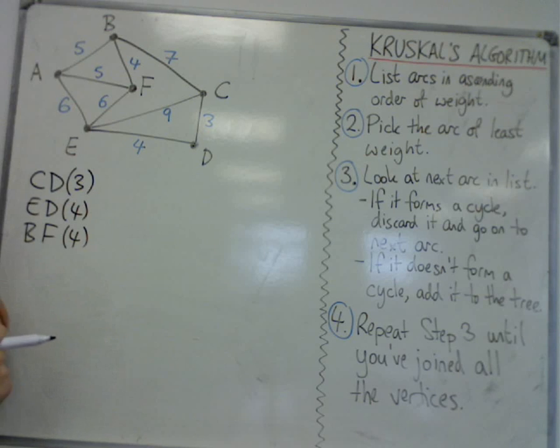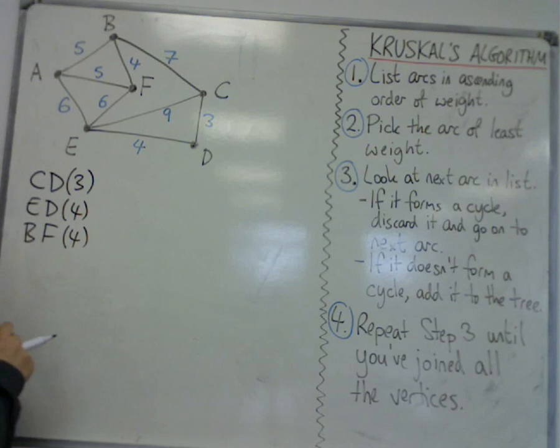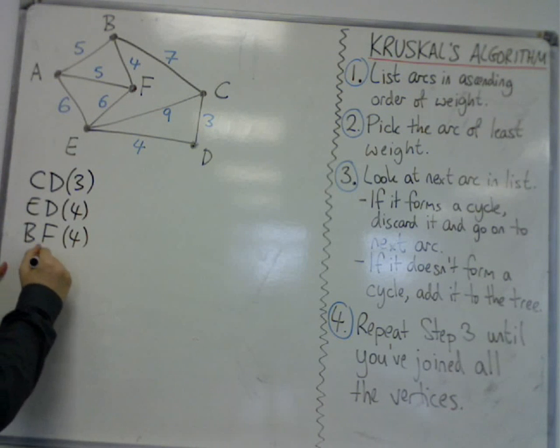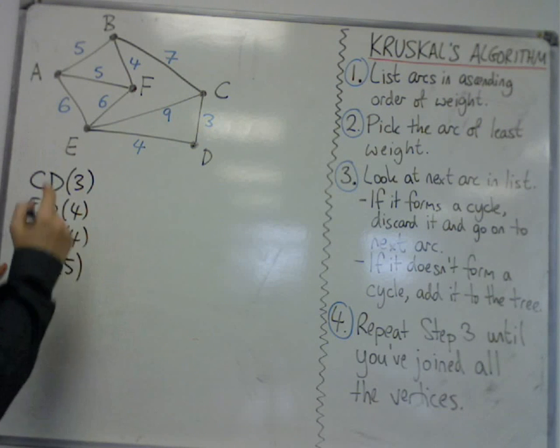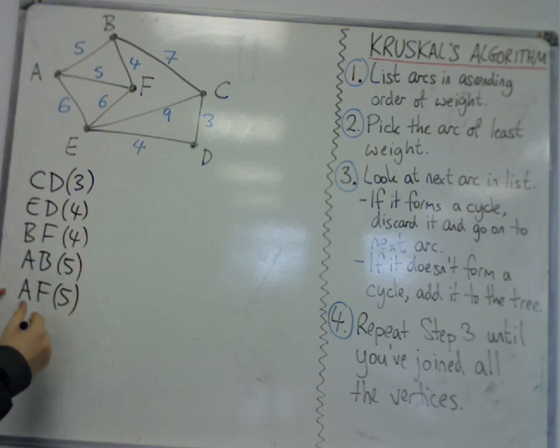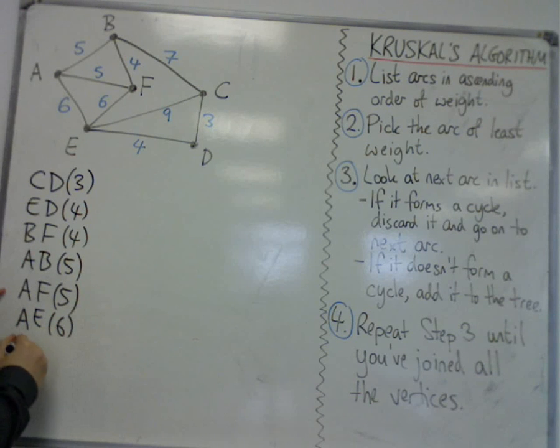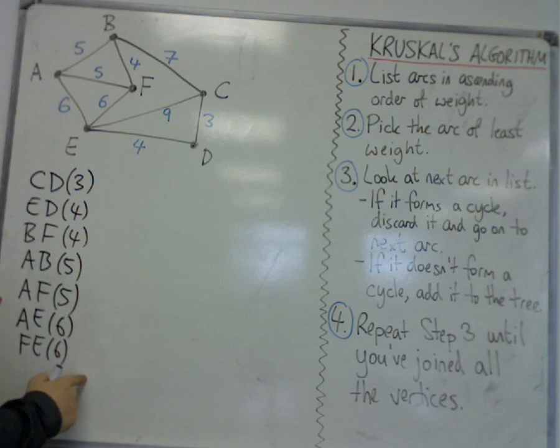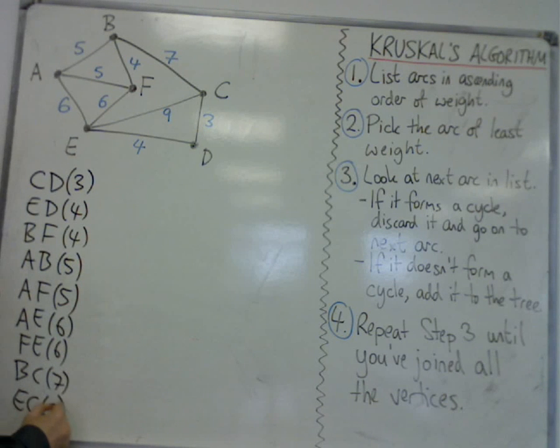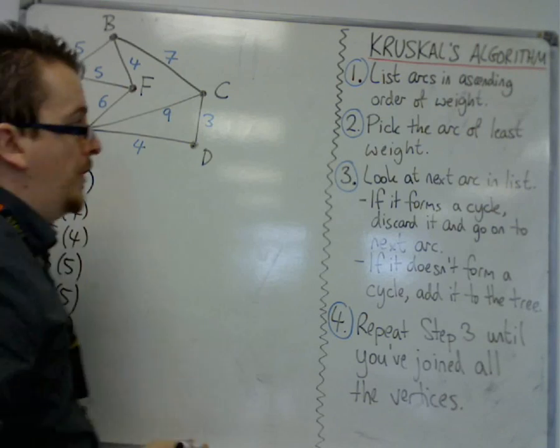So I'm going to write them down like that. ED, then BF. It also doesn't matter which order I write the letters around. I could have written DE here instead of ED. That doesn't matter. So if you want to keep them in alphabetical order, you can. So that deals with the two fours. Then I've got two fives. I've got AB at five, I've got AF at five. I've got two sixes. I've got AE and FE.